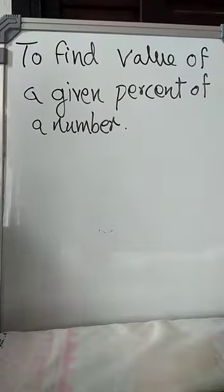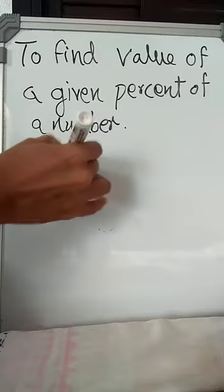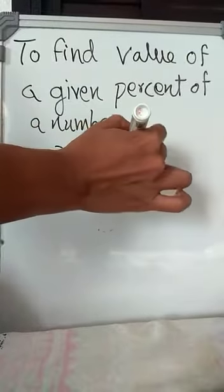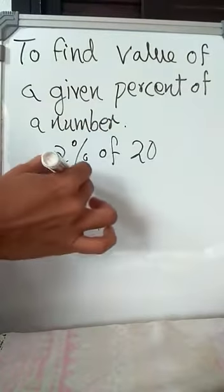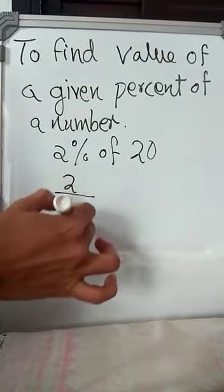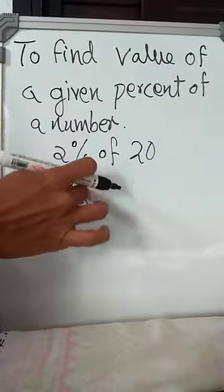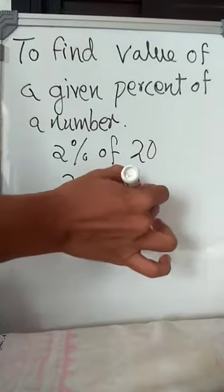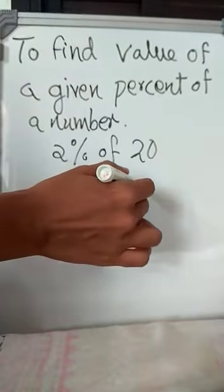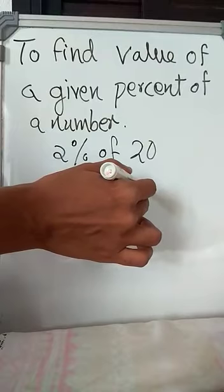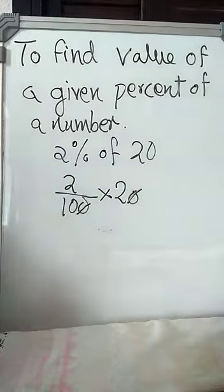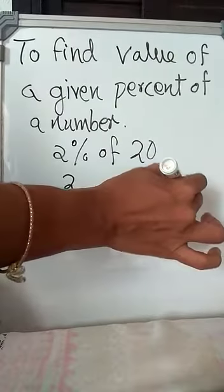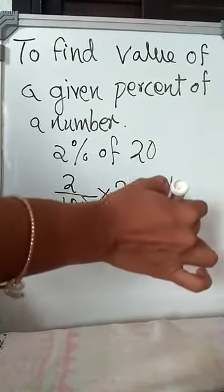Next example given is 2% of 20. How will you find 2% of 20? That is equal to 2 by 100 into 20. So you can cut this. How will you cut? 1-0 you can cut. Then what will you get? Numerator will be 4, 2 into 2 is 4, and the denominator will be 10.